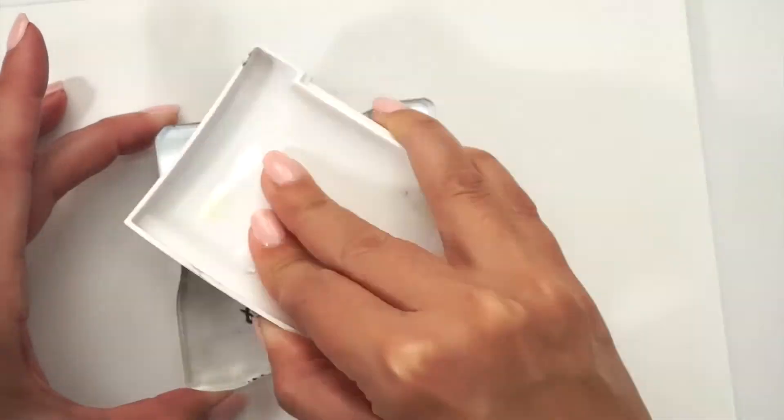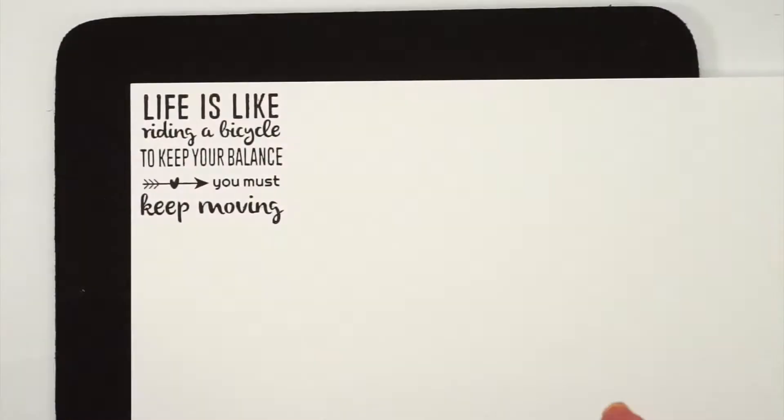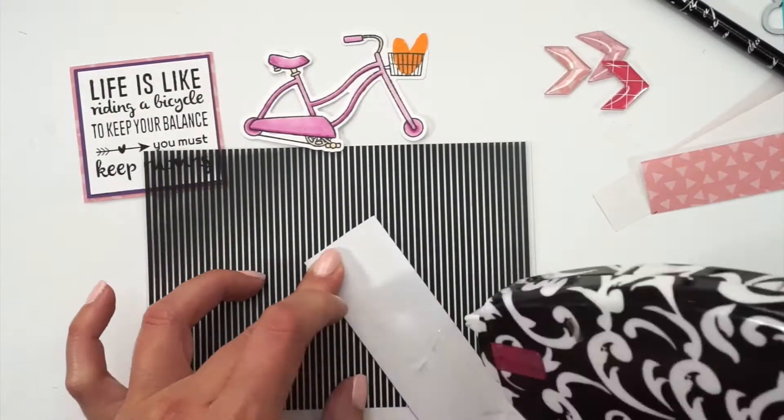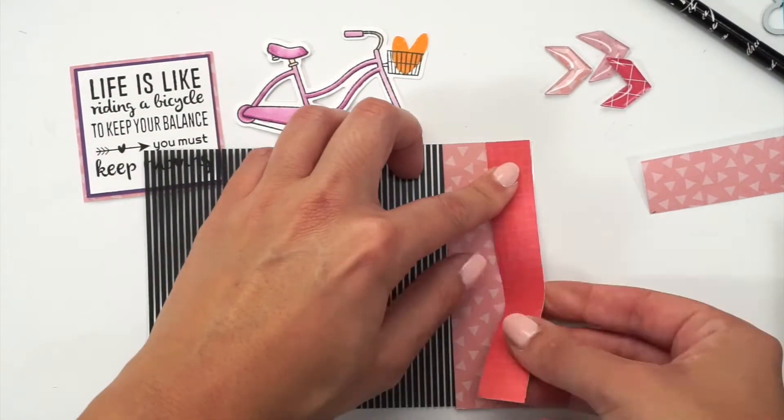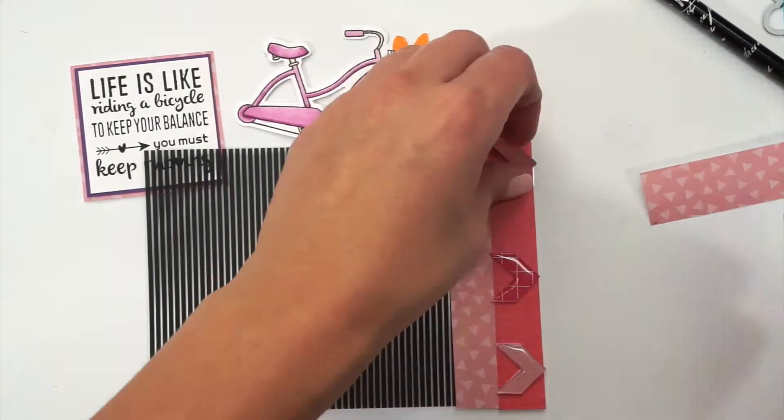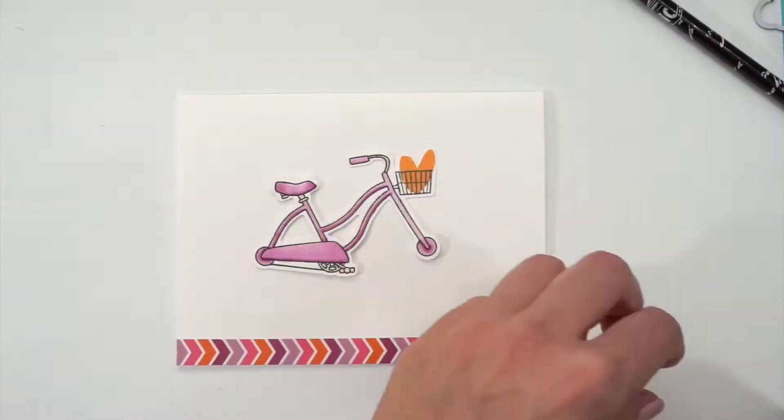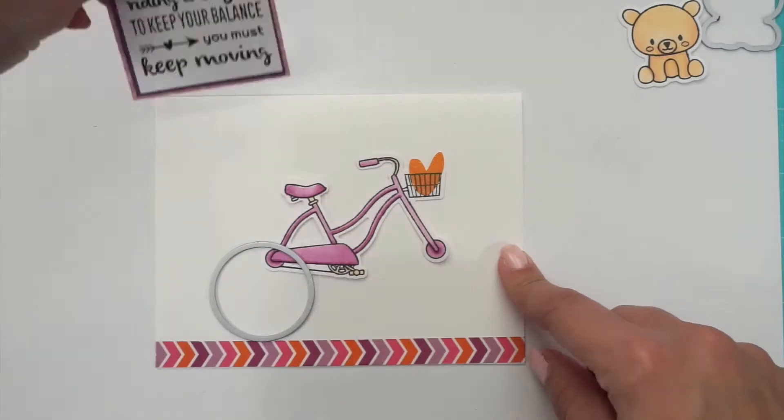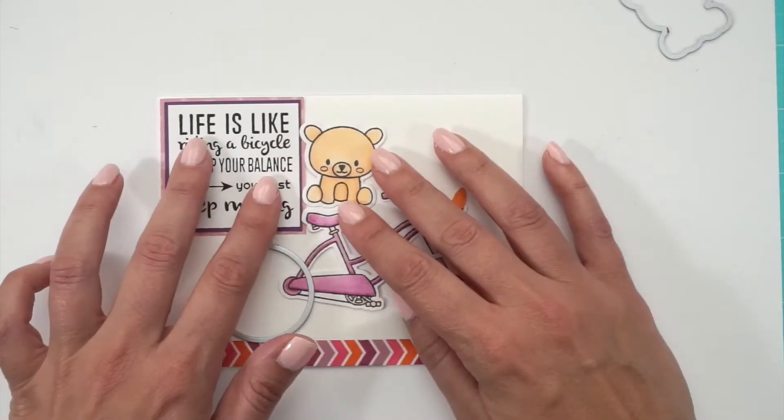Then I chose one of the sentiments to stamp and use with Versafine. So it's a clear stamp image. And I'm decorating the grid and putting some cute arrows so they know where to pull. And now I'm going to put everything in the front of the card, like I mentioned before, so we know the placement for the bicycle and where to die-cut the wheels.